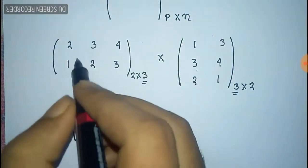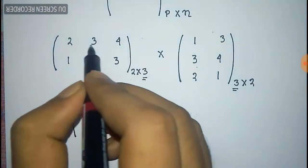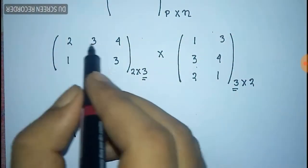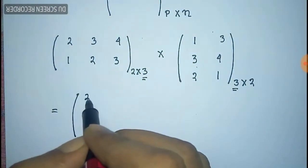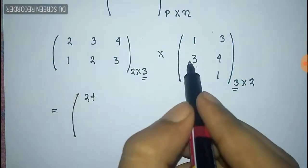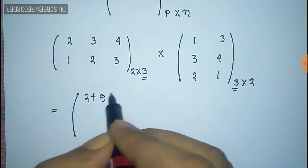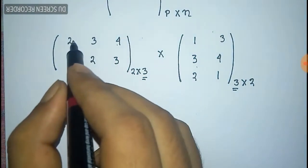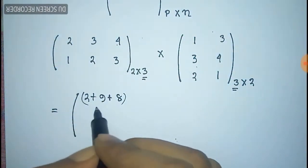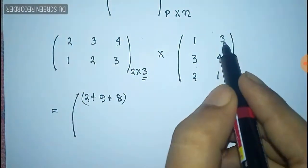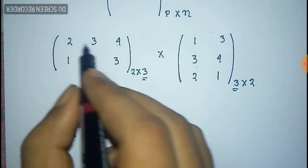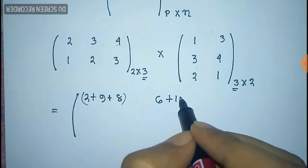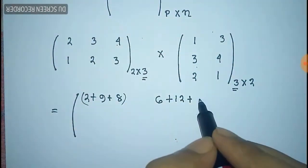The multiplication rule is: multiply the first row of the first matrix by the first column of the second matrix and sum the products. So: 2×1 = 2, plus 3×3 = 9, plus 4×2 = 8. Then first row with second column: 2×3 = 6, plus 3×4 = 12, plus 4×1 = 4.